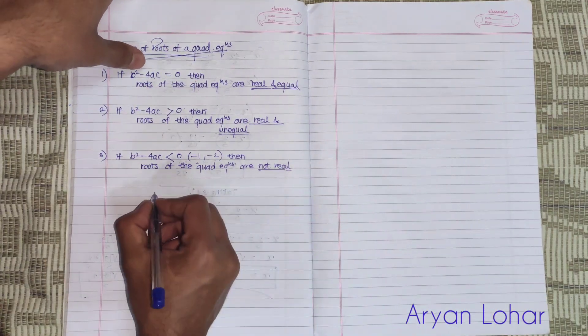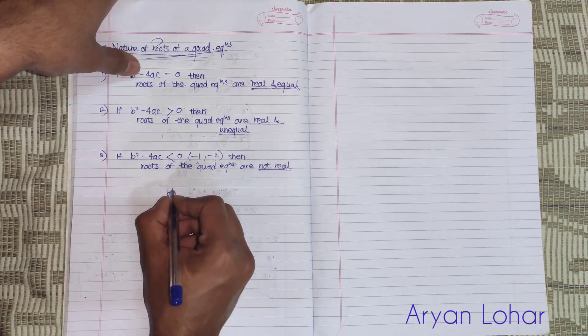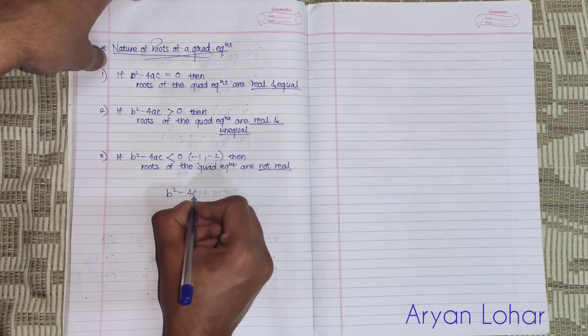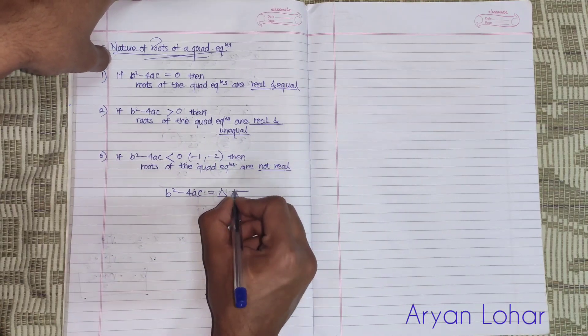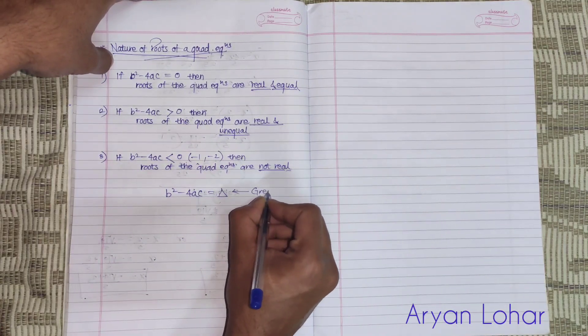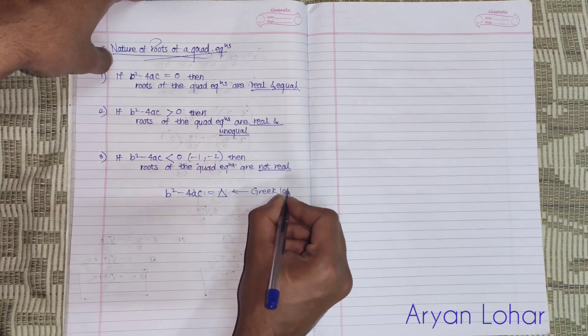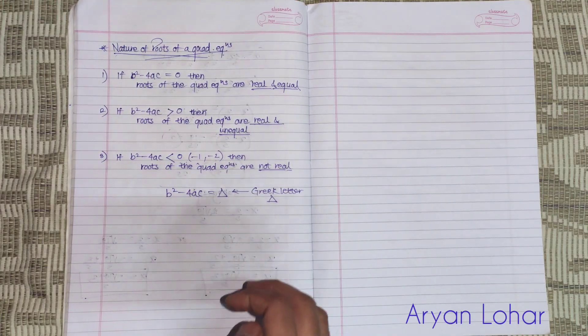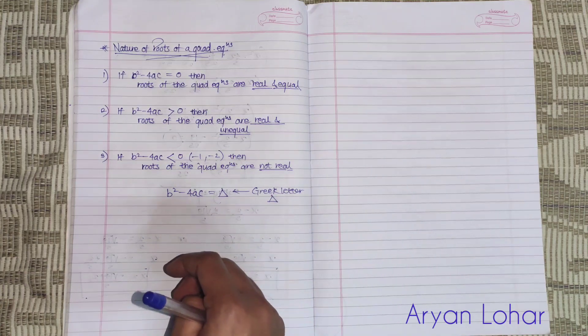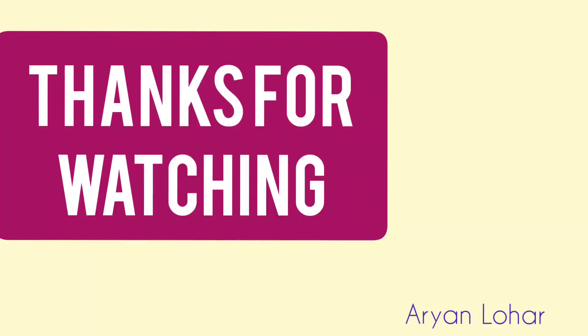This formula, b square minus 4AC, is equals to delta - that is a Greek letter. This is known as delta or it is also known as discriminant.